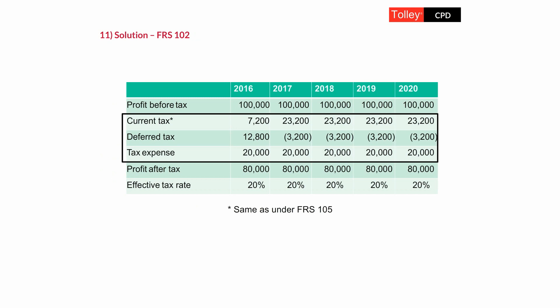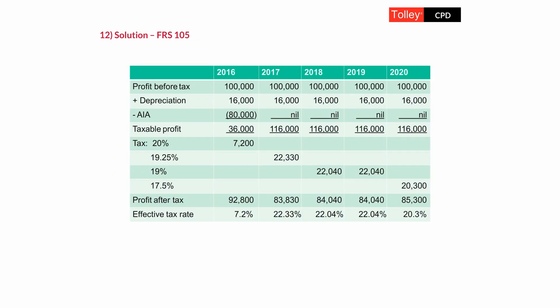Now let's look at the same example using live tax rates: 20%, then down to 19%, going down to 17% from 1st April 2020. The year-end December 2017 would have three months at 20% and nine months at 19% — an average rate of 19.25% — then 19% for the following two periods. For year-end December 2020, it's three months at 19% and nine months at 17% — an average of 17.5%. Without booking deferred tax, we'd end up with quite widely varying effective tax rates.